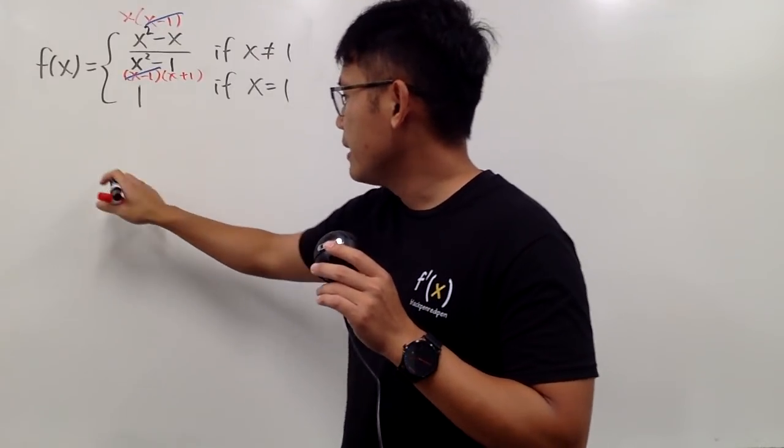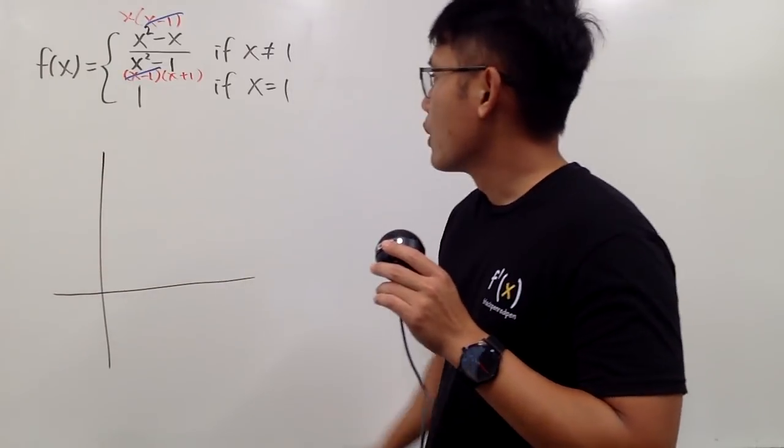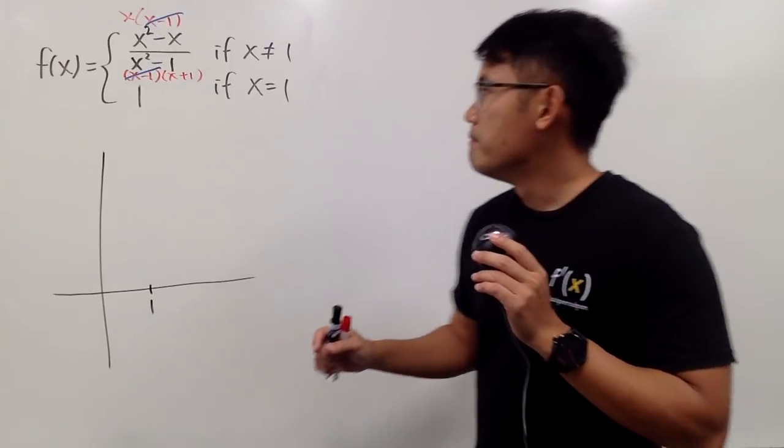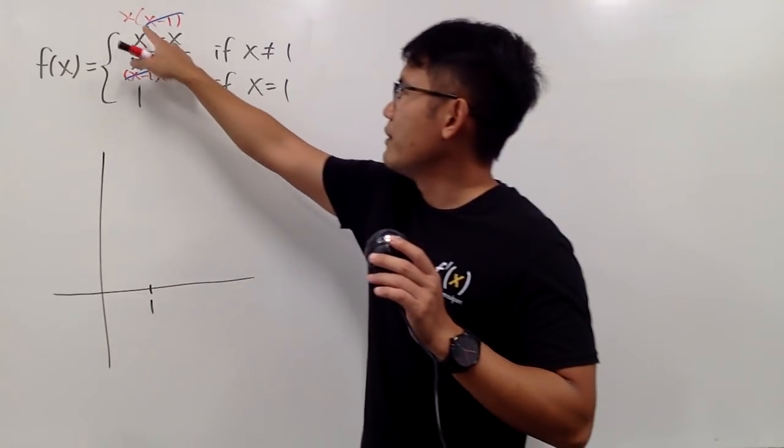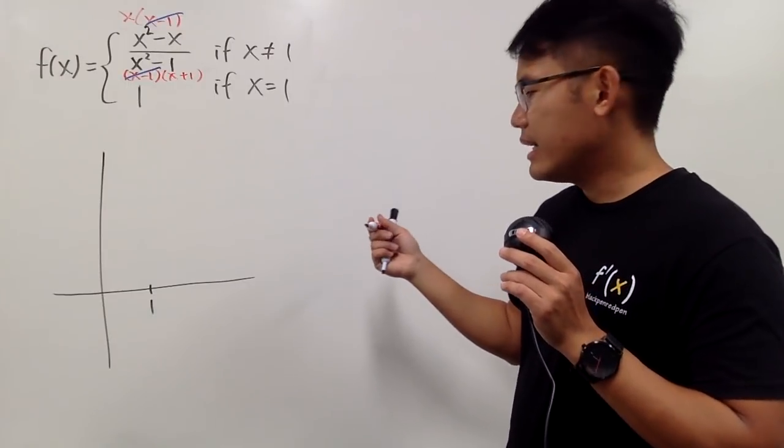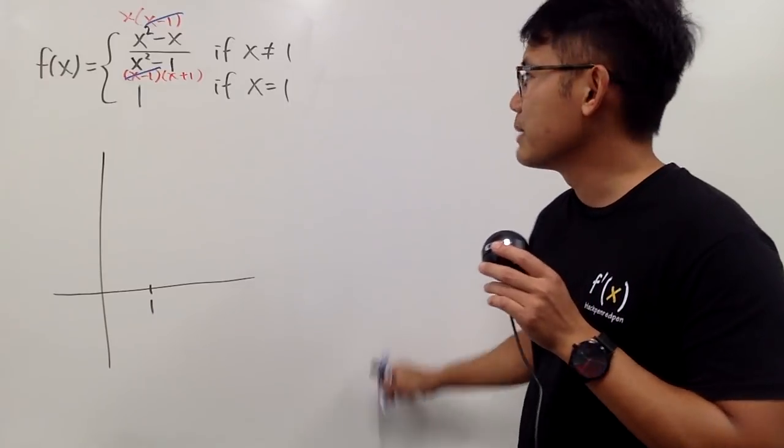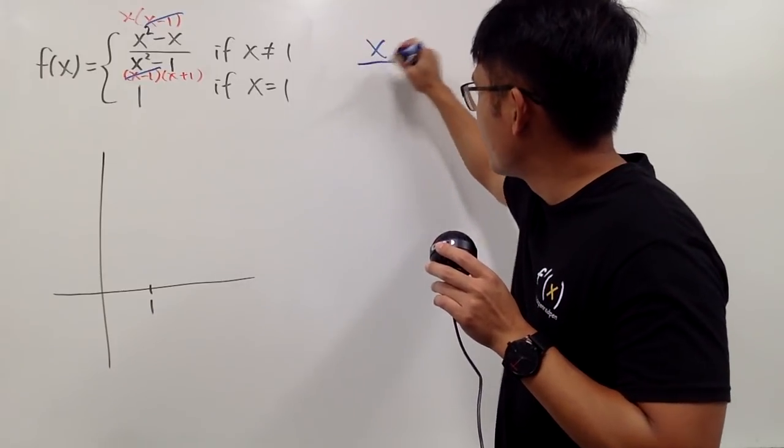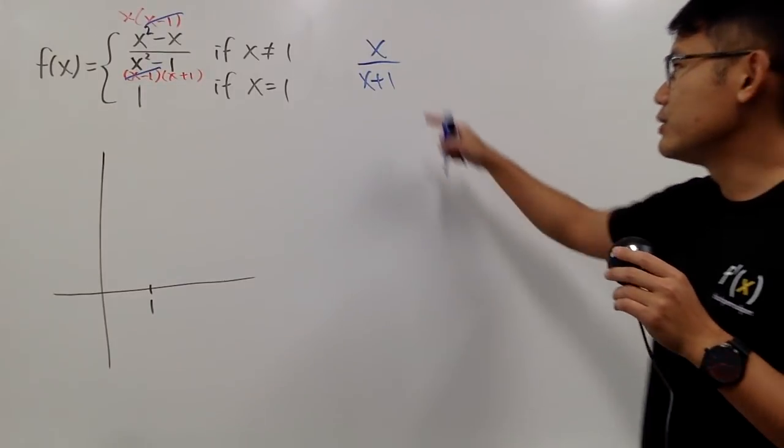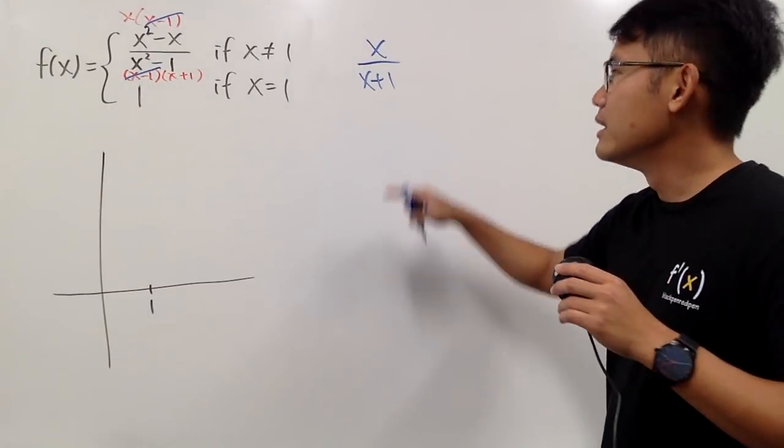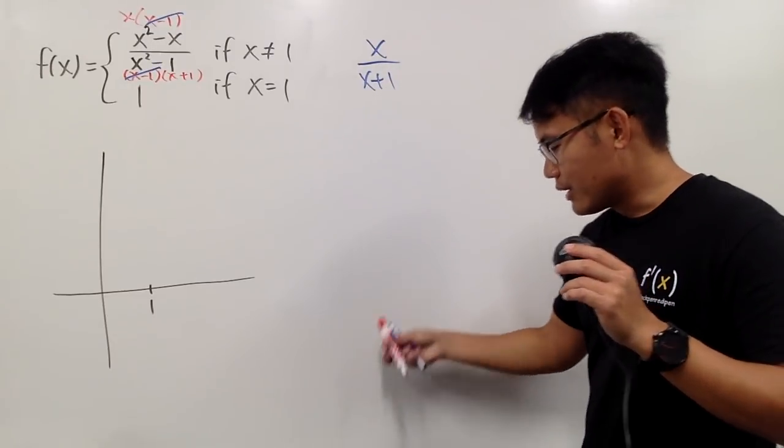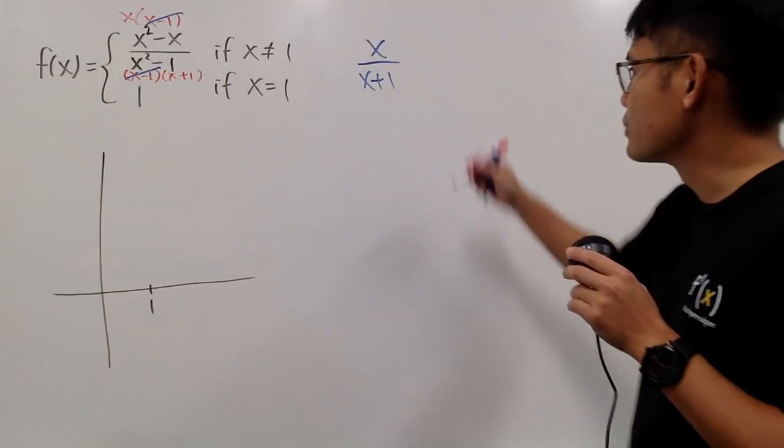Let's go ahead and make our sketch of the graph right here. When x is at 1, it's pretty much we have to graph x over x plus 1, right? And now the question is, how can we graph x over x plus 1? Well, one of the ways to do it is you can do long division if you would like, and you can also just put plus 1 minus 1 if you would like, or if you can use a graphing calculator, that's up to you as well.